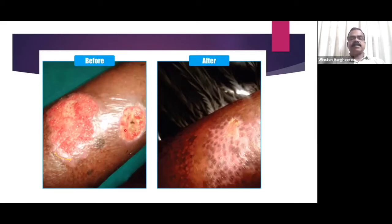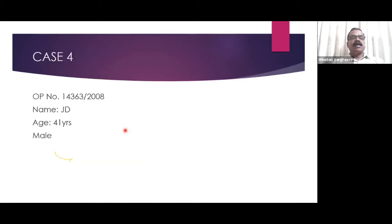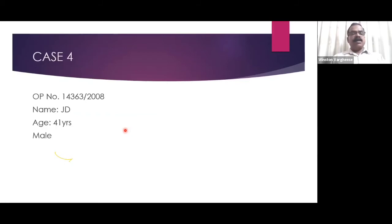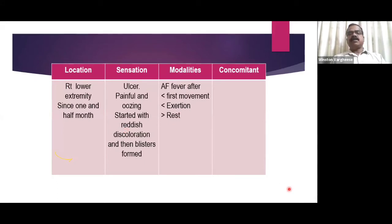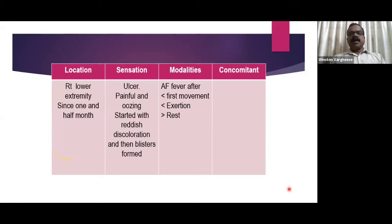Case four: a 41-year-old male presented with ulcers of the lower extremities since one and a half months — painful and oozing. The condition started with reddish discoloration, then blisters formed following a fever. Pain was aggravated by first movement and exertion, ameliorated by rest. History: patient had fever with chilliness one and a half months back, developed redness and swelling of the leg, underwent surgery at an allopathic hospital, and then developed the ulcer.